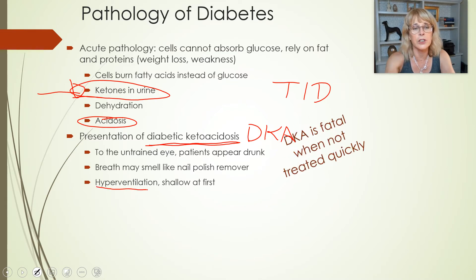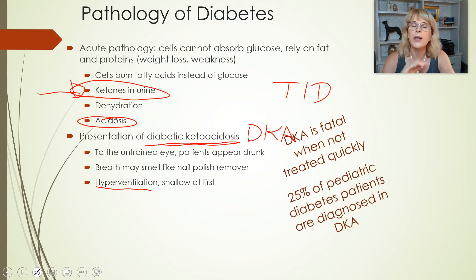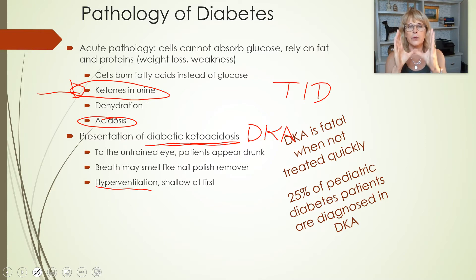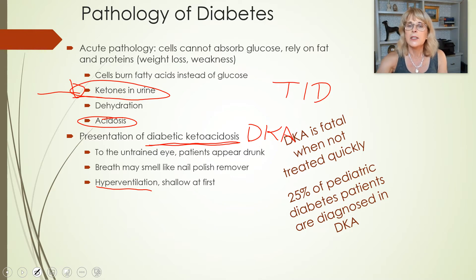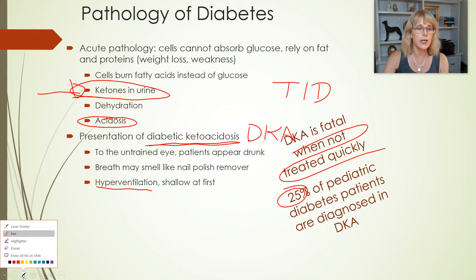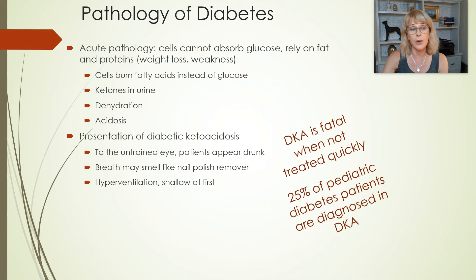DKA will cause hyperventilation — any acidosis causes you to breathe faster, which we'll discuss more when we get to the respiratory system and blood pH. Diabetic ketoacidosis is fatal when it's not treated quickly. And yet, 25% of the children that are diagnosed with diabetes are not diagnosed until they are already in ketoacidosis.